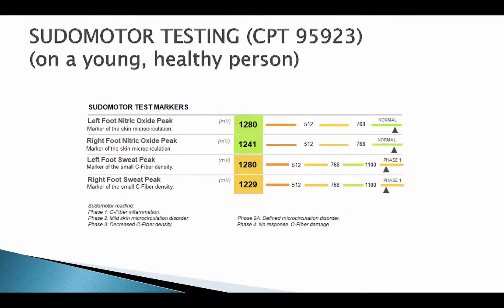Pseudomotor testing places electrodes on the bottom of the person's soles, then applies a heat stimulus. The machine measures the release of nitric oxide when that stimulus occurs — decreased nitric oxide creates problems with microcirculation. The machine also measures sweat released after the heat stimulus. Decreased sweat indicates decreased C-fiber density; C-fibers are the autonomic nerves controlling sweat on the soles of the feet, making this a sensitive test for early peripheral neuropathy.